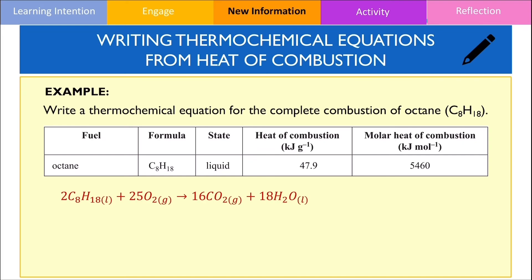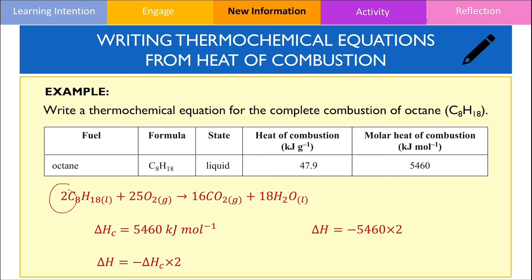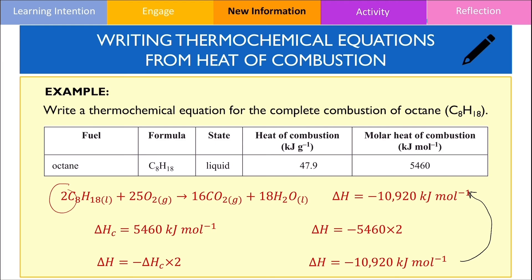In the data booklet, it says that the combustion of 1 mole of octane releases 5460 kilojoules of energy. Since our equation contains 2 moles of octane, we multiply the heat of combustion by 2 to find the change in enthalpy of the reaction. The negative sign is used because combustion is an exothermic process, giving us an answer of negative 10,920 kilojoules per mole. We should write the enthalpy change alongside the balanced chemical equation.